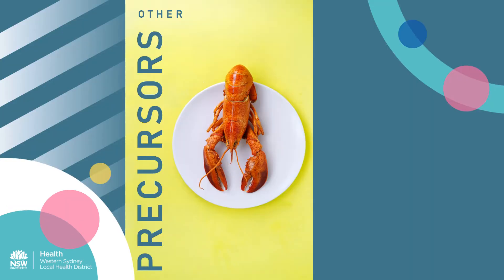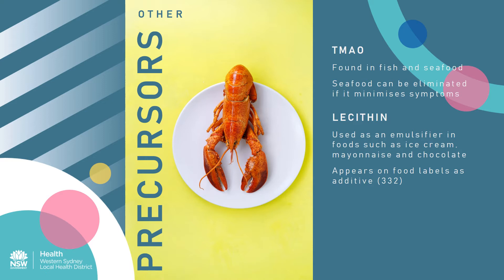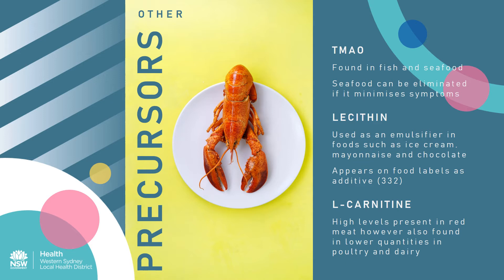Other precursors destined to be converted into TMA in the gut include TMAO, which is found in fish and other seafood. Saltwater fish contain higher amounts compared to freshwater fish, so freshwater options such as cod or barramundi may be a better choice. As TMAO is non-essential, it is possible to eliminate these foods if it helps to improve symptoms. Lecithin, which contains choline, is often used as an emulsifier in foods such as ice cream, mayonnaise and chocolate, and appears as the additive 322 on food labels. L-carnitine is an amino acid present in high levels in red meat and in lower quantities in poultry and dairy.